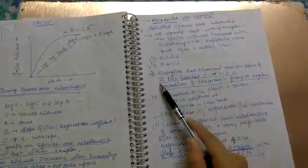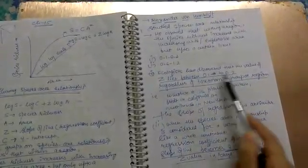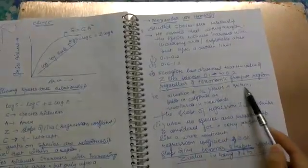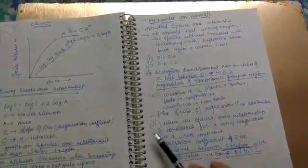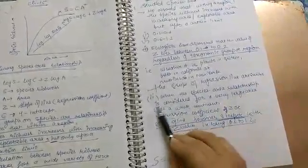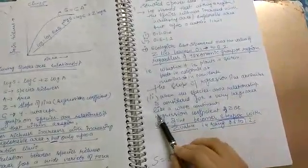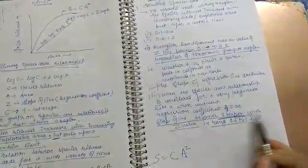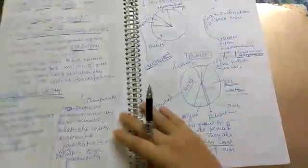Ecologists have discovered that the value of Z lies between 0.1 to 0.2 regardless of taxonomical group or region, whether it is plants in Britain, birds in California, or mollusks in New York. The slope of regression coefficient line is similar when the species-area relationship is considered for a very large area like a whole continent. The regression coefficient Z becomes steeper, that is 0.6 to 1.2.